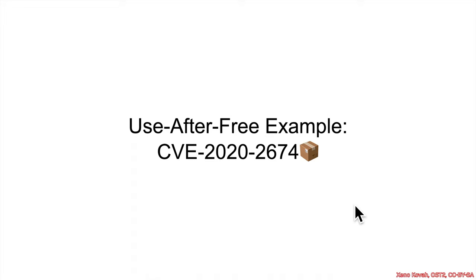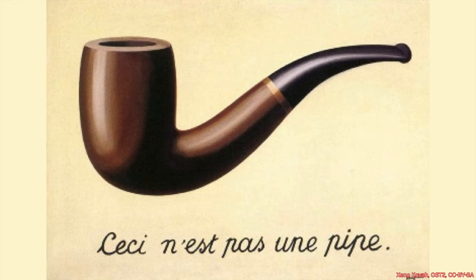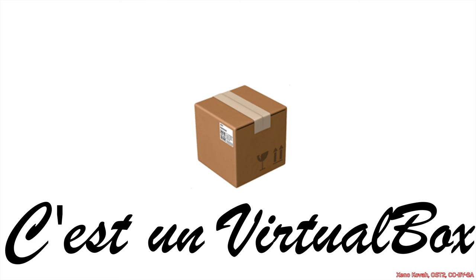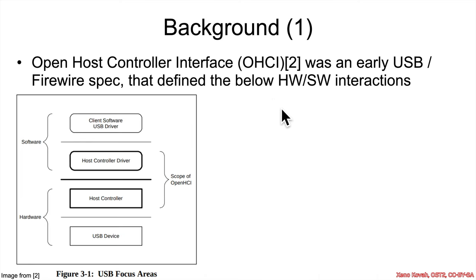Now let's take a look at this virtualization vulnerability. Before we begin, I'm obliged to remind you that this is not a pipe. However, this is a virtual box. So this vulnerability is in the VirtualBox software, and it's specifically in the open host controller interface virtualization portion.